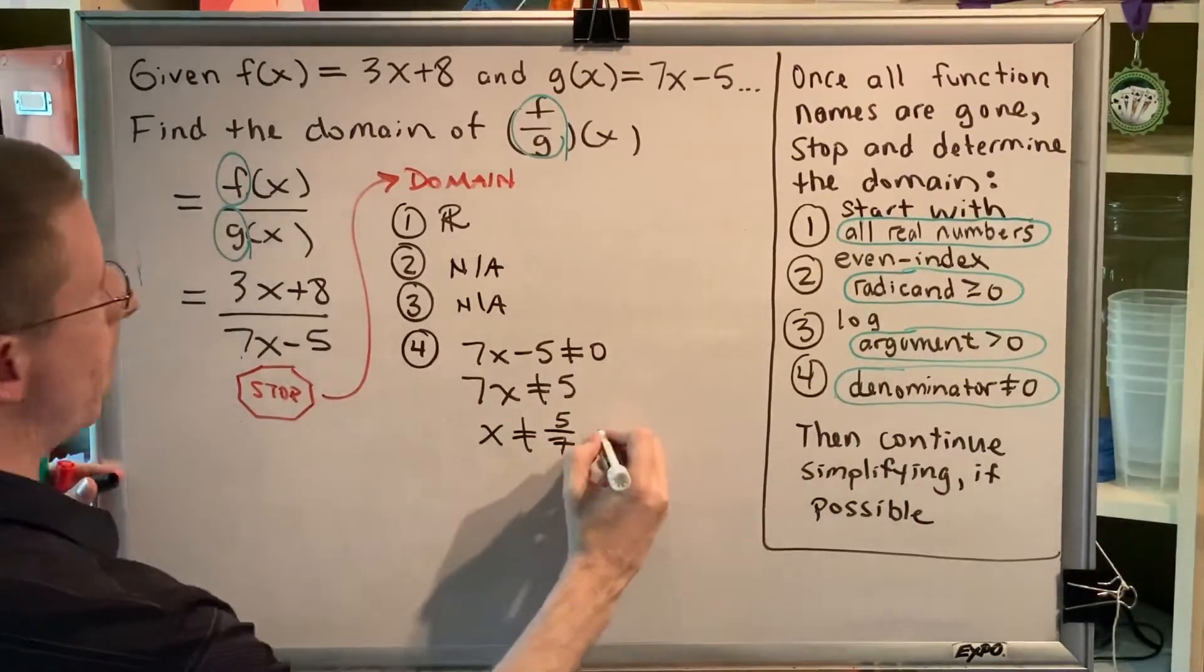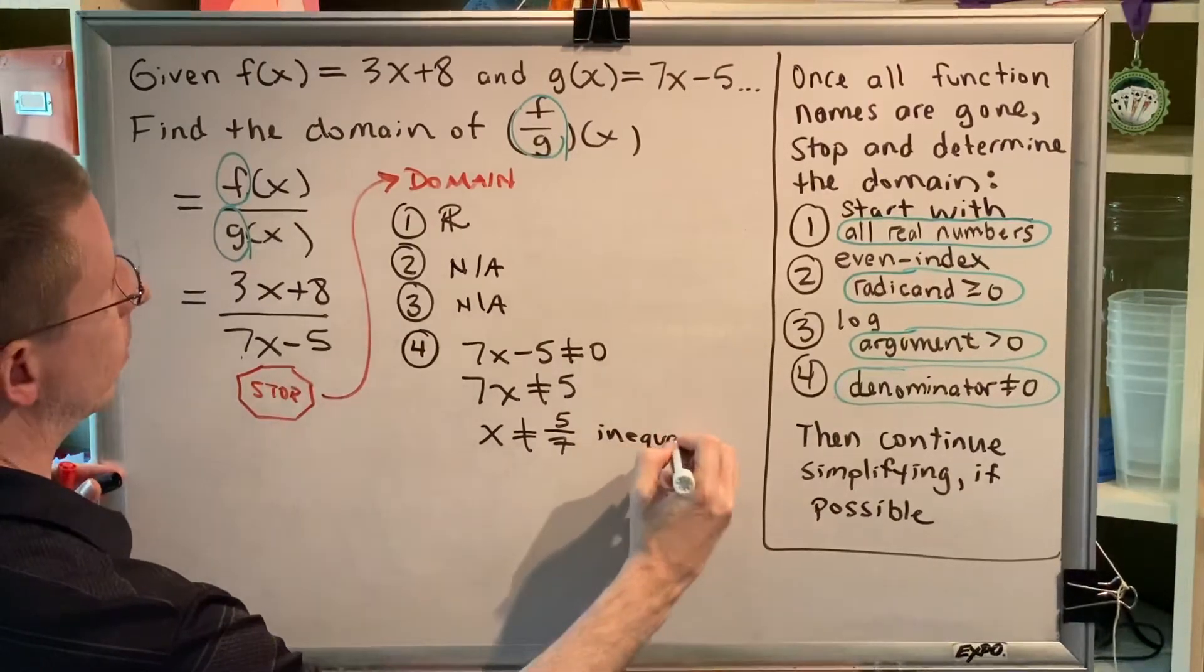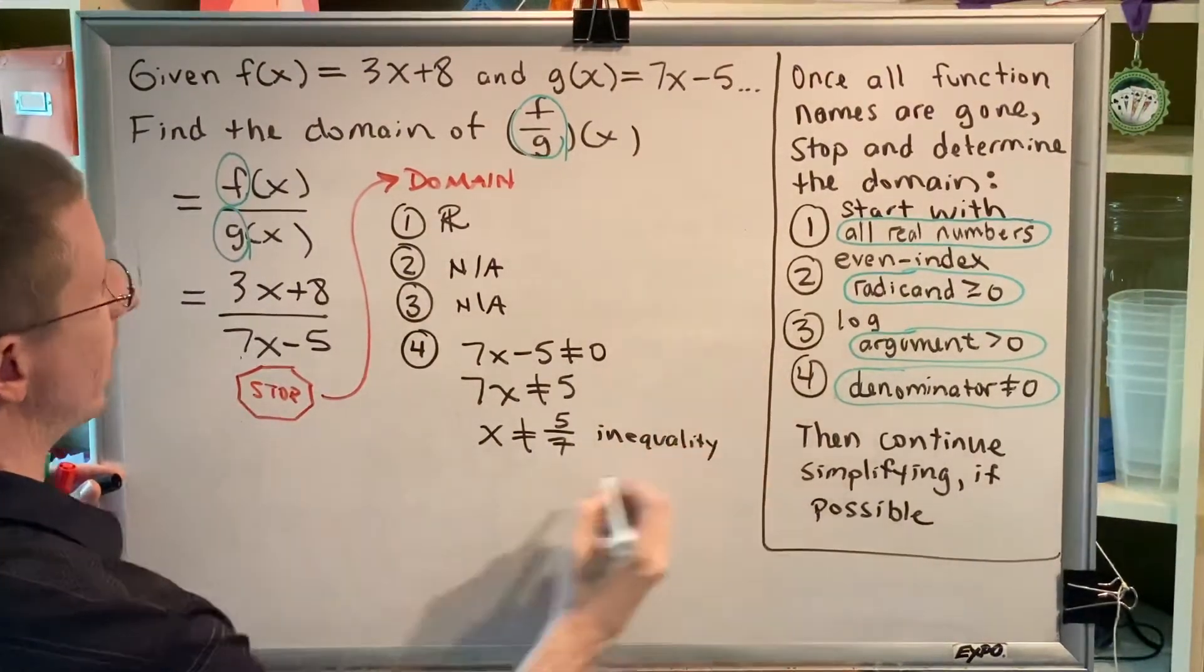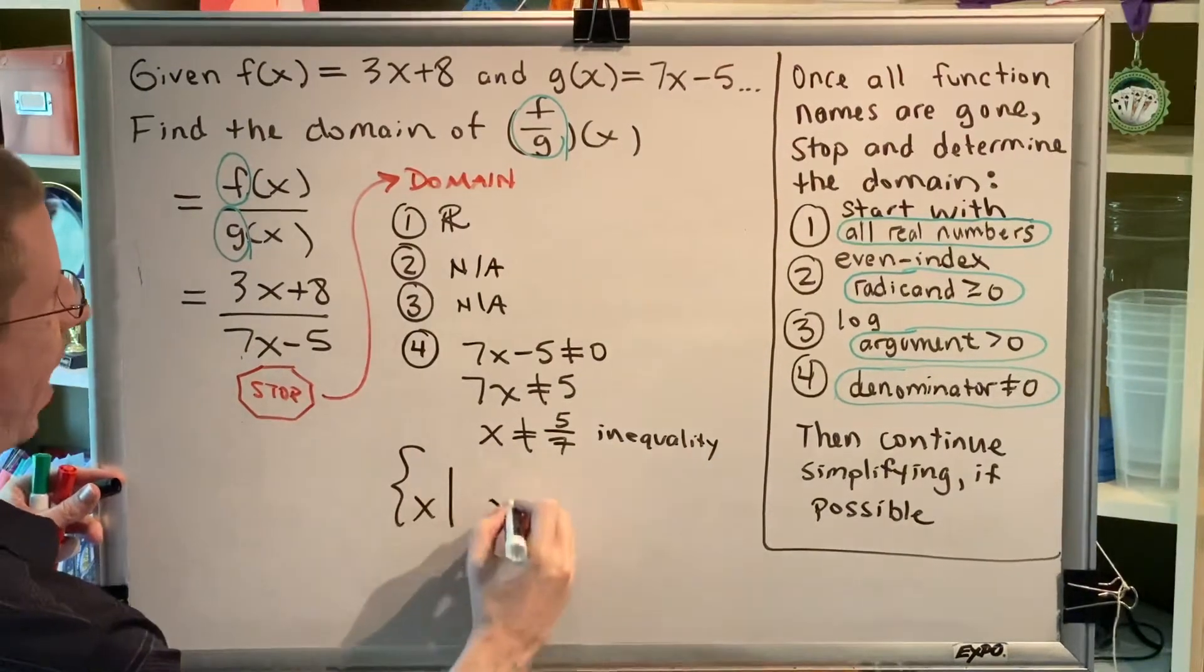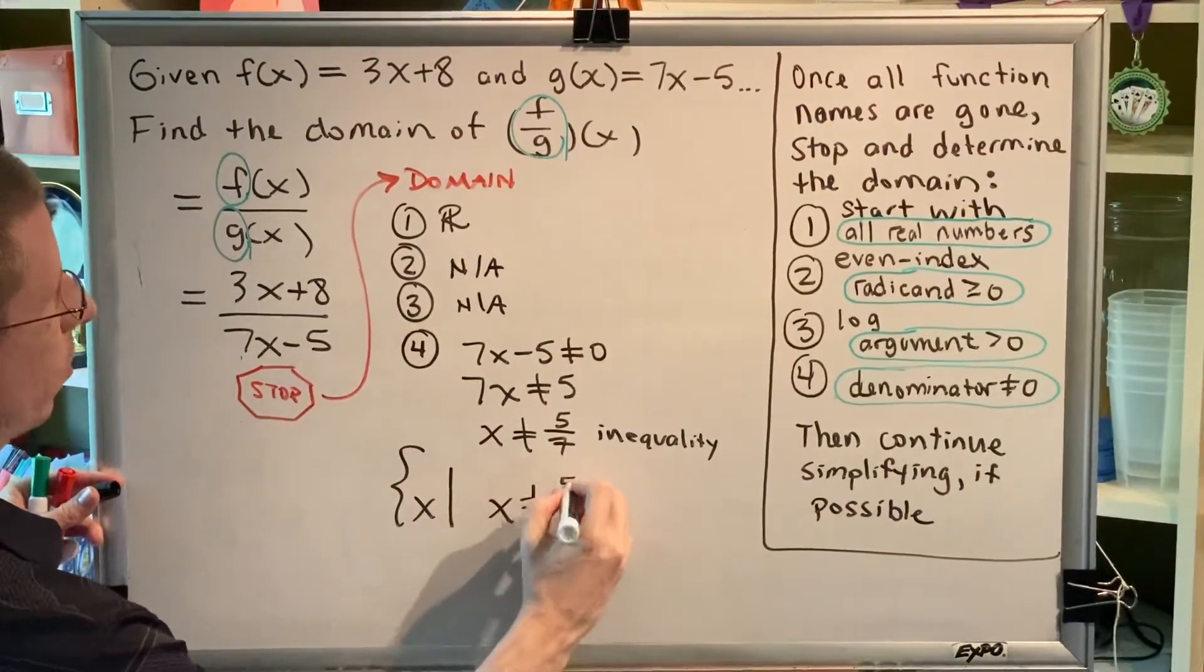So, this is my domain as an inequality. As a set, I would write the set of all x such that x is not equal to 5 sevenths.